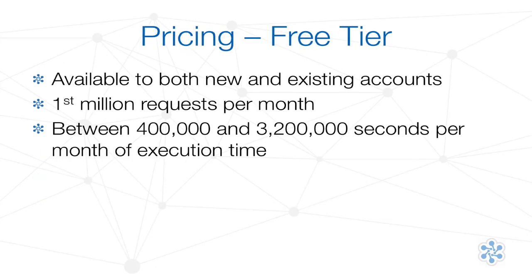Like most services, AWS has a free tier for Lambda that is applied to both new and existing accounts. The free tier covers the first million requests and up to 3.2 million seconds per month — a lot of processing before we get charged anything. The number of seconds per month is dependent on the amount of memory we allocate for our code to run. 3.2 million is on the high end using the lowest memory setting of 128 megabytes. At the max memory of 1 gigabyte, the free tier allows 400,000 seconds per month before charging us.